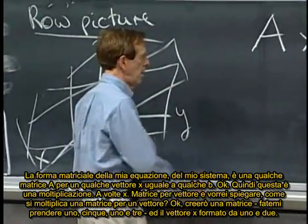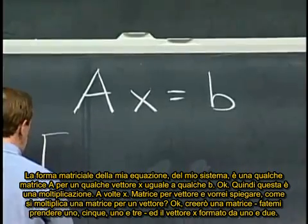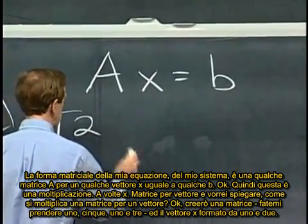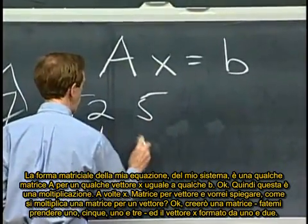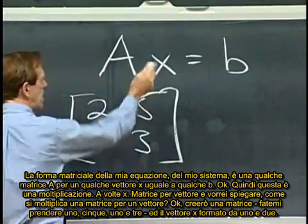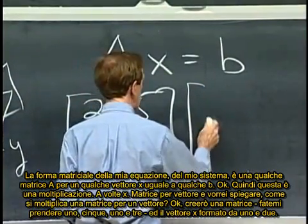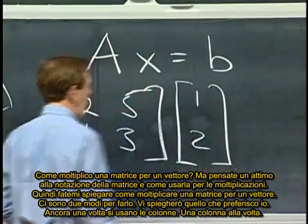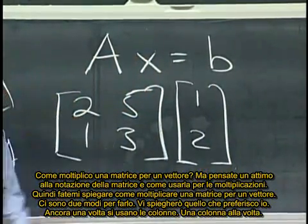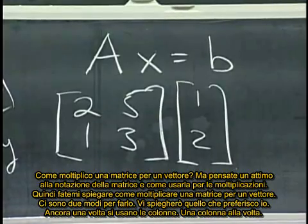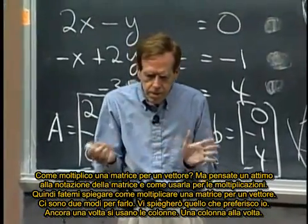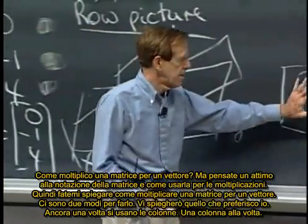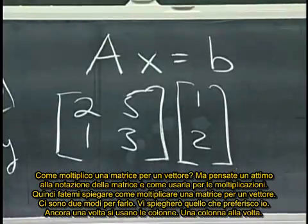So I'm just going to create a matrix, let me take 2, 5, 1, 3, and let me take a vector x to be, say, 1 and 2. How do I multiply a matrix by a vector? And just think a little bit about matrix notation and how to do that multiplication.